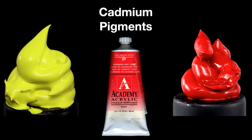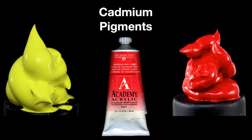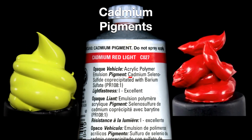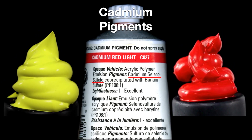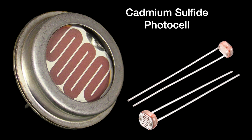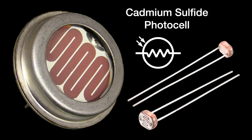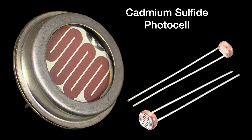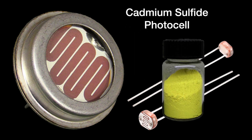Cadmium sulfide is used as a yellow pigment called cadmium yellow. And cadmium selenide — or in this case, cadmium selenosulfide — is used as a red pigment often called cadmium red. This photocell, or photoresistor, decreases in electrical resistance with brighter light intensity, allowing more current to flow when brightly illuminated — it can change its resistance by a factor of up to 10,000 going from darkness to light. The photoresistor gets its light sensitivity from cadmium sulfide, the same ingredient as the pigment cadmium yellow.